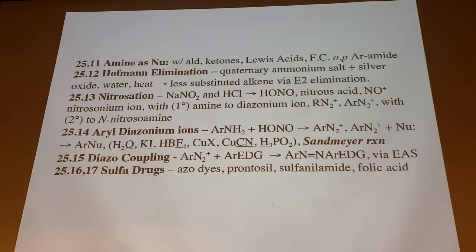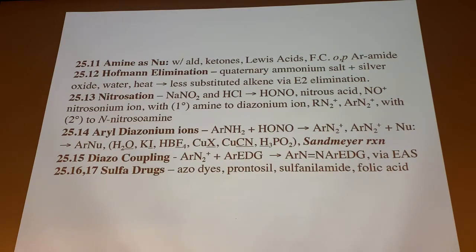Amines act as nucleophiles with ketones and Lewis acids. No Friedel-Crafts on aniline, but we'll see a workaround via the aromatic amide. Hofmann elimination — only if we have time — gives the less-substituted alkene upon E2 elimination via the quaternary ammonium salt. Because it's bulkier, hydroxide base forms the less-substituted alkene, which is counter to Zaitsev's rule from 351.